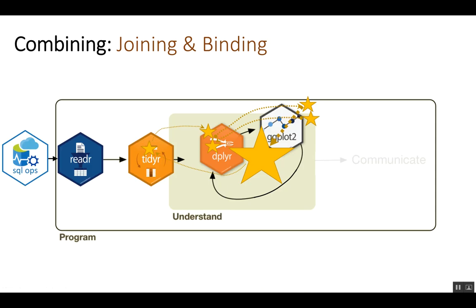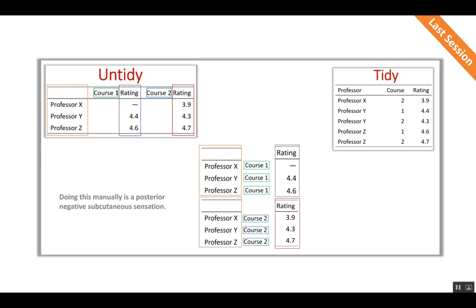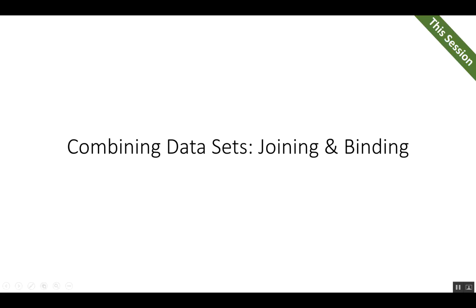To do this, we'll be using the dplyr package for the most part. Recall last week we learned about untidy versus tidy data and how to tidy it up using the gather function. We also learned how to spread it back into a crosstab with the spread function. In this session, we'll be talking about combining data sets — joining and binding them together.